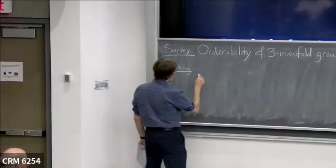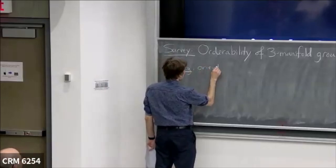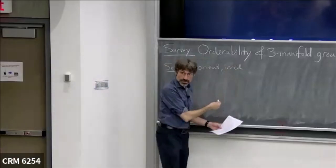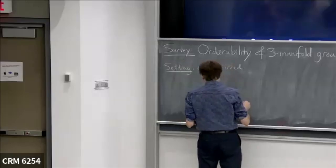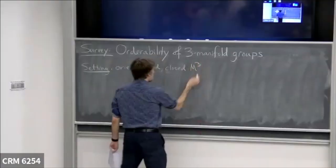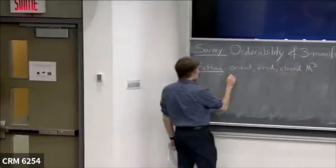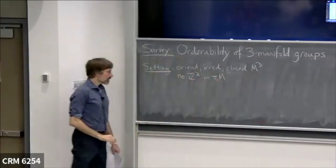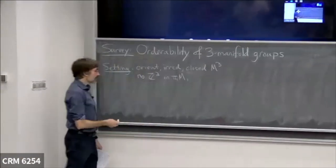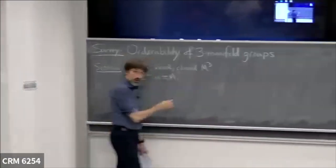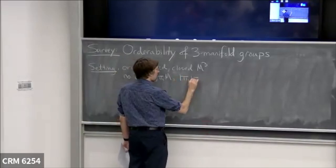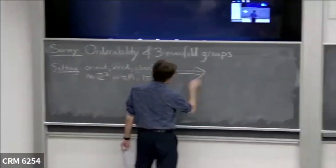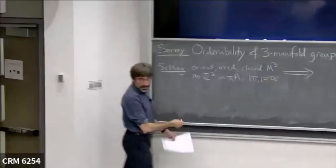The setting for today: I'm going to be interested in a three-manifold that is orientable, irreducible — meaning every embedded two-sphere bounds a ball, so the fundamental group is not a free product — and closed. Moreover, I'm going to assume there are no Z plus Z's in its fundamental group, so it's atoroidal. And I'll assume that pi-1 of M is infinite. With this list of hypotheses, by the work of Thurston and Perelman, we know this means our manifold M is hyperbolic.